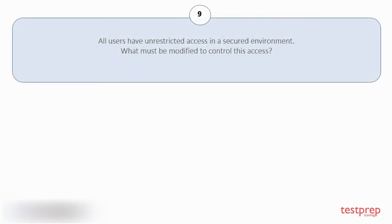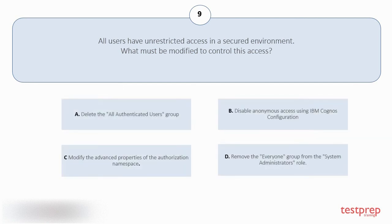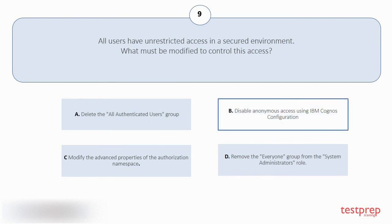Question number 9: all users have unrestricted access in a secured environment. What must be modified to control this access? Your options are: A. Delete the all authenticated users group. B. Disable anonymous access using IBM Cognos configuration. C. Modify the advanced properties of the authorization namespace. D. Remove the everyone group from the system administrator's role. The correct answer is option B.